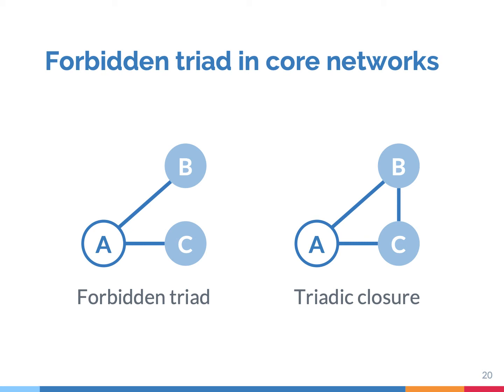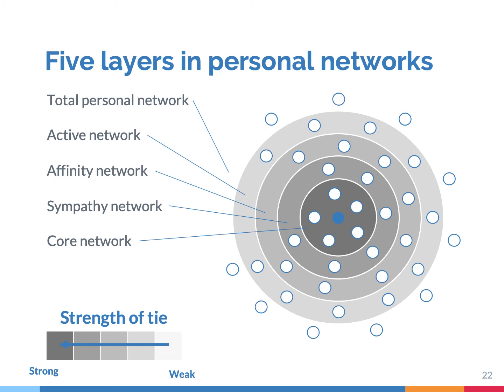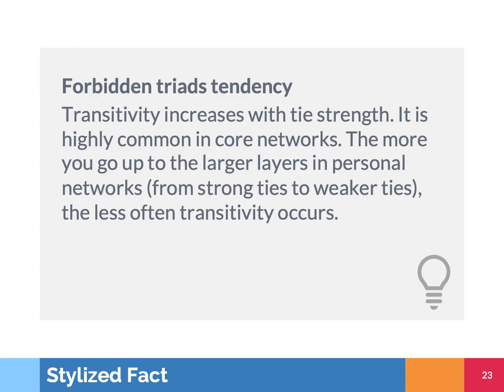But regarding weak ties, this transitivity tendency is less likely to occur. Emma may be your boss, for instance, and Floyd may be your uncle — that makes them less likely to know each other than your friends do. If you organize a party, you're unlikely to invite both Emma and Floyd. So how often transitivity happens depends on the strength of ties. If you look at your core network, your strongest ties, then triadic closure is very common — your friends know each other. But the more you zoom out and look at your weaker ties, transitivity occurs less often. Transitivity increases with tie strength. This is called the forbidden triad's tendency.